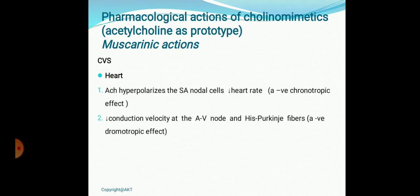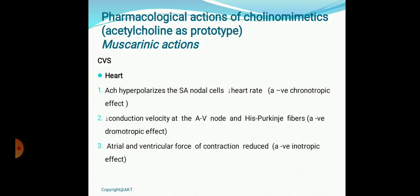Acetylcholine also reduces conduction velocity across the AV node and in Purkinje fibers — a negative dromotropic effect. It mainly decreases the force of contraction of the atria, and to some extent also affects the ventricle — a negative inotropic effect. Overall, the effect on the heart is decrease in heart rate, decrease in conduction velocity across the AV node, and decrease in force of contraction, primarily of the atria. Clinically, this produces bradycardia.